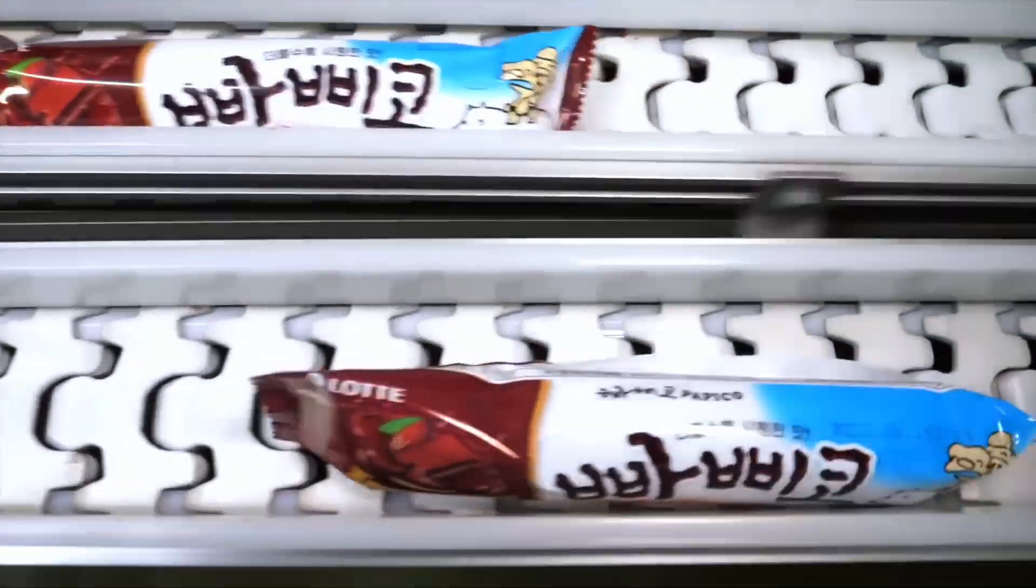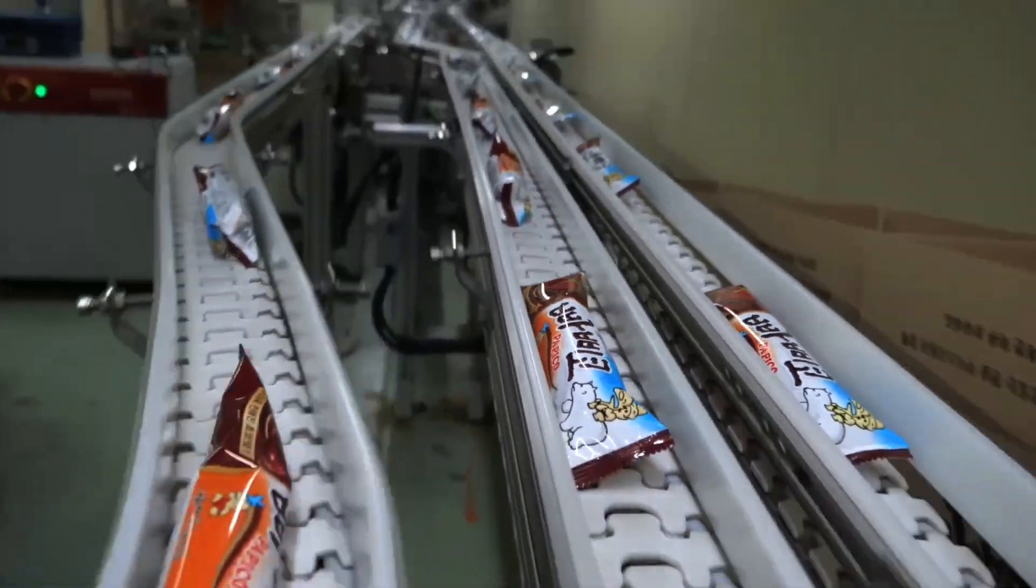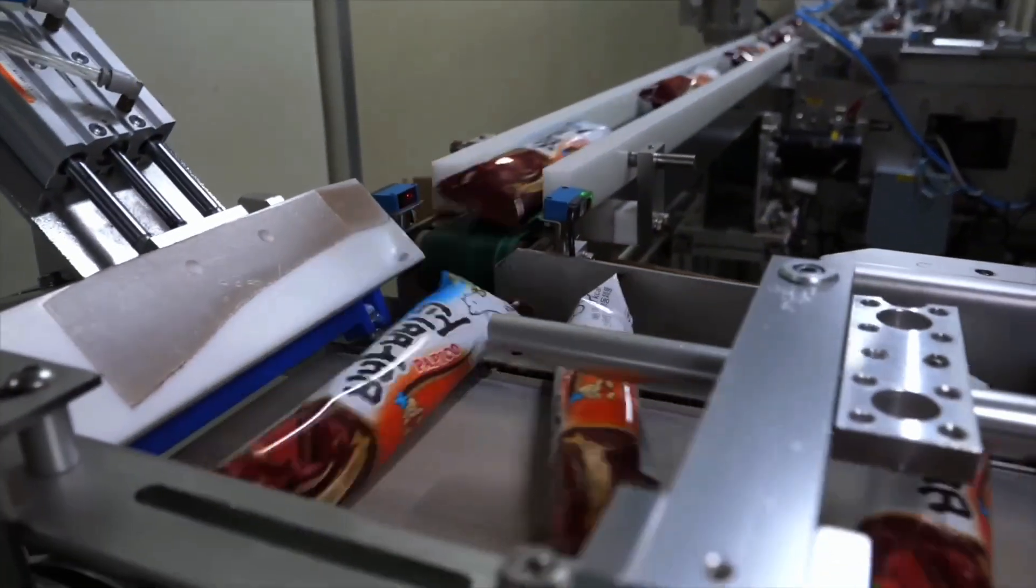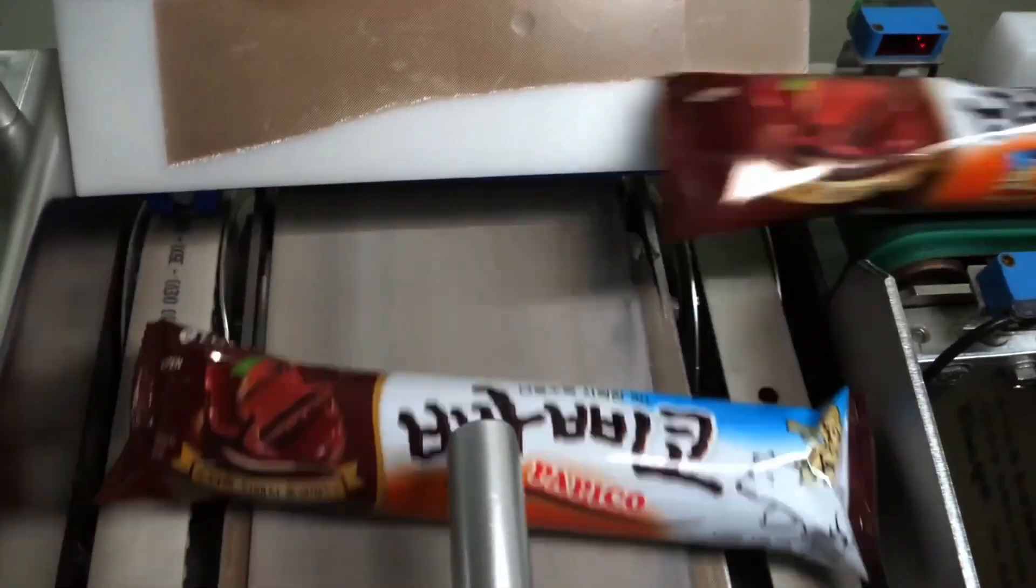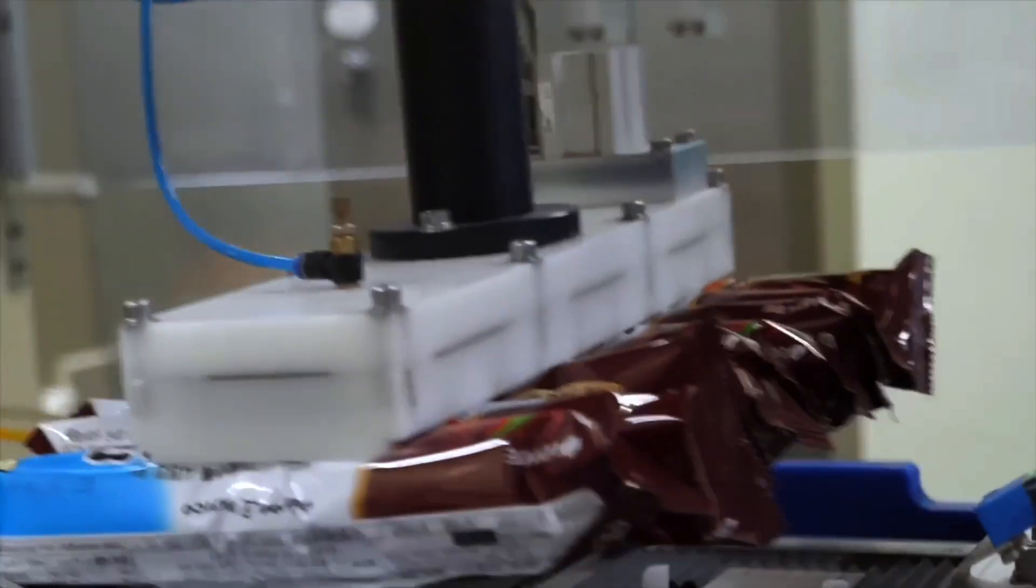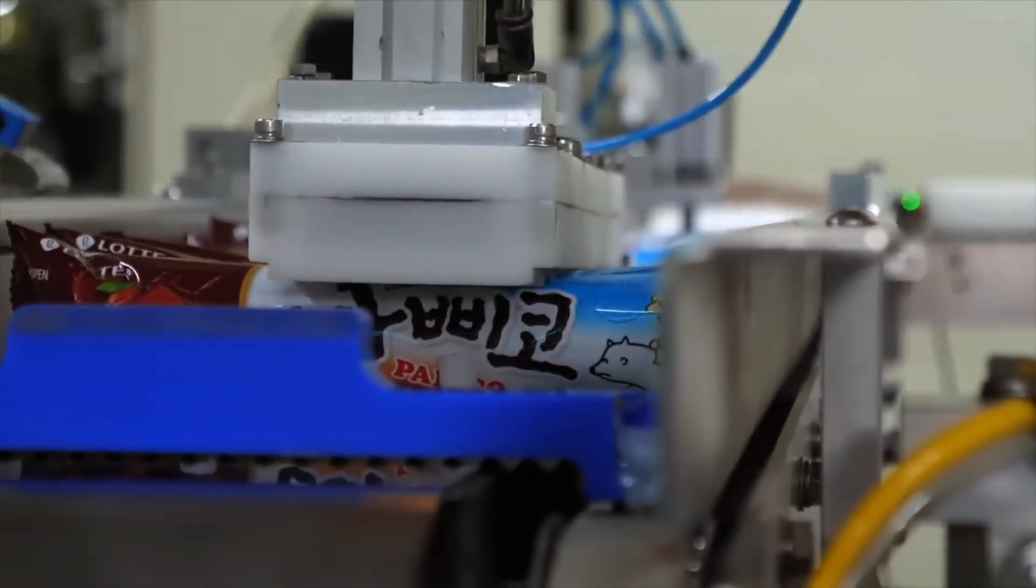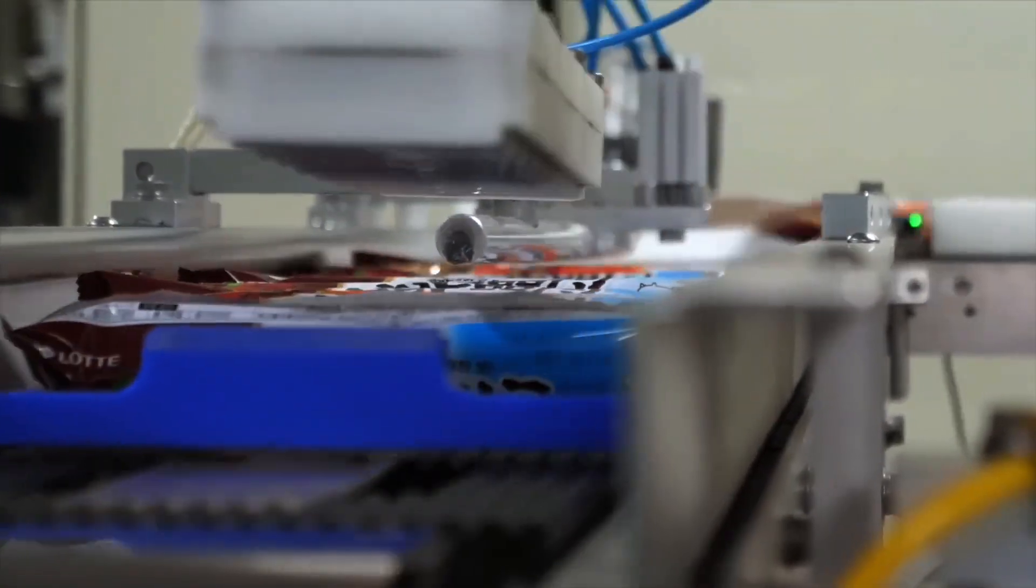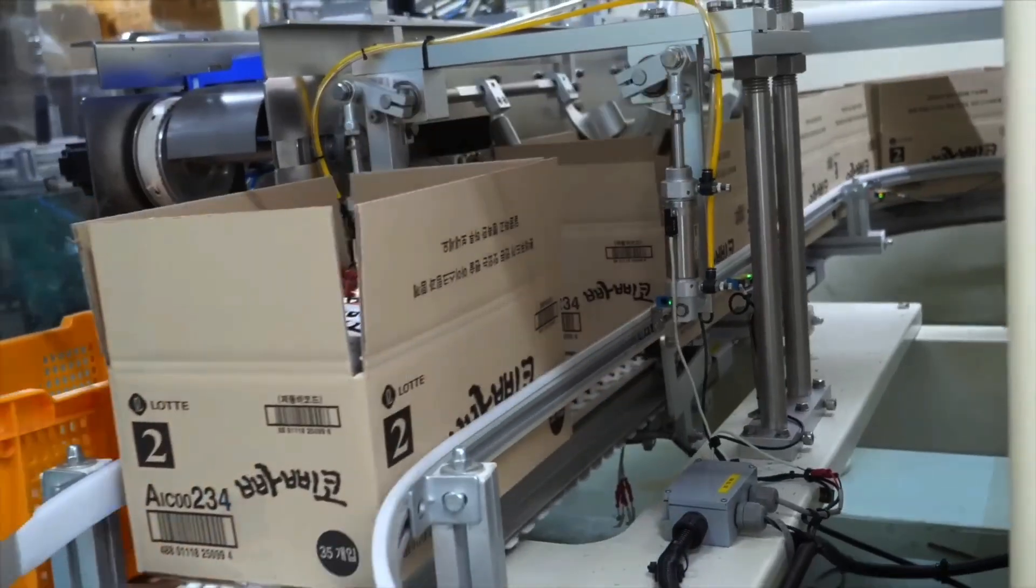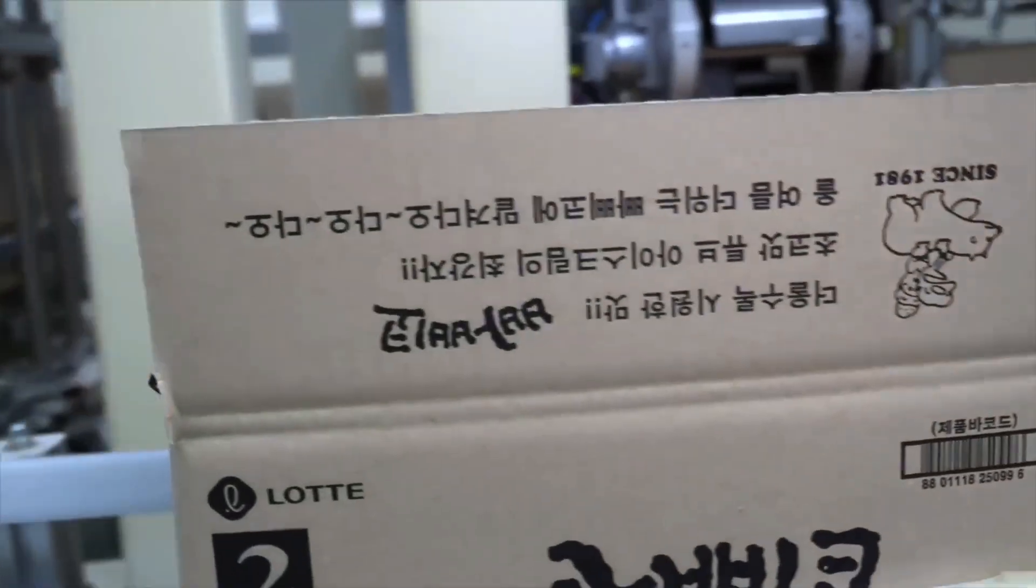Before ice cream heads to the warehouse, every batch undergoes multi-level quality control. In on-site labs, random samples are taken and tested for density, temperature, structure, inclusion distribution, and taste profile. Stress tests are also performed. For example, exposing the product to fluctuating temperatures to simulate transport or short-term defrosting. Technicians even test the sound of the chocolate shell cracking. Because the crunch is part of the sensory experience, too.